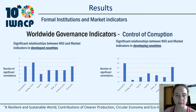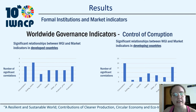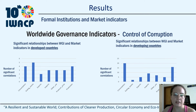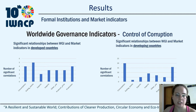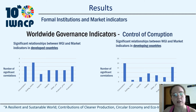And control of corruption, measured by the perception in which public power is exercised for private gain. The correlation of WGI dimensions with market indicators showed that most of the significant relations were with developed countries, and that they occur with the ethanol consumption indicator, as well as with developing countries.